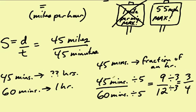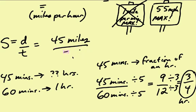For 45 minutes, that turns out to be 3 quarters of an hour. So instead of putting 45 minutes, let me go ahead and put in 3 quarters of an hour, or 3 fourths of an hour.